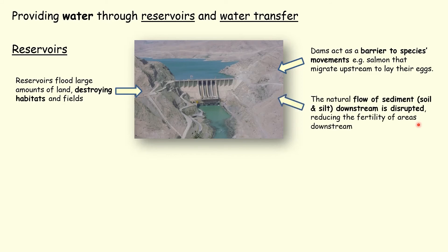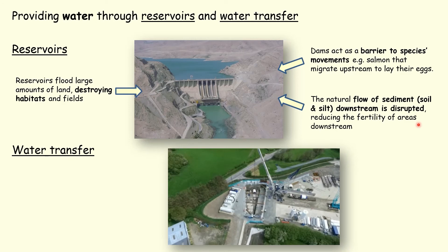Rivers naturally carry soil and silt downstream, which gives us fertile fields next to the river. If you have a big dam, it'll stop that process from occurring. Water transfer is the way that we move water from areas where there's too much rain to areas where there's too little. All of Birmingham's water comes from the Elan Valley in North Wales, and this shows the pipes built going underneath the ground using a boring machine to bring the water from north Wales to Birmingham.